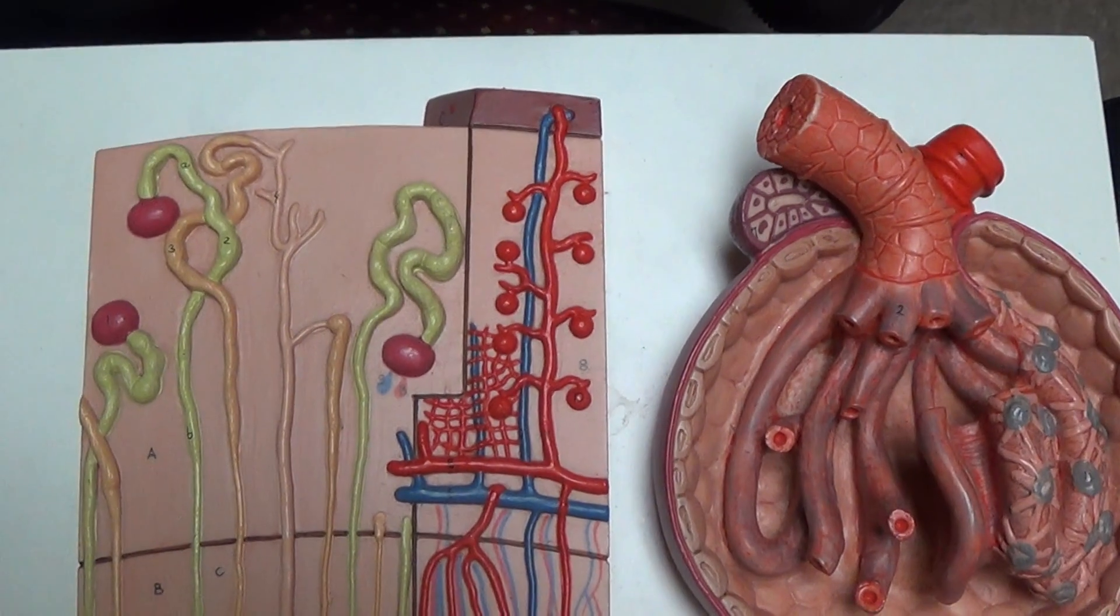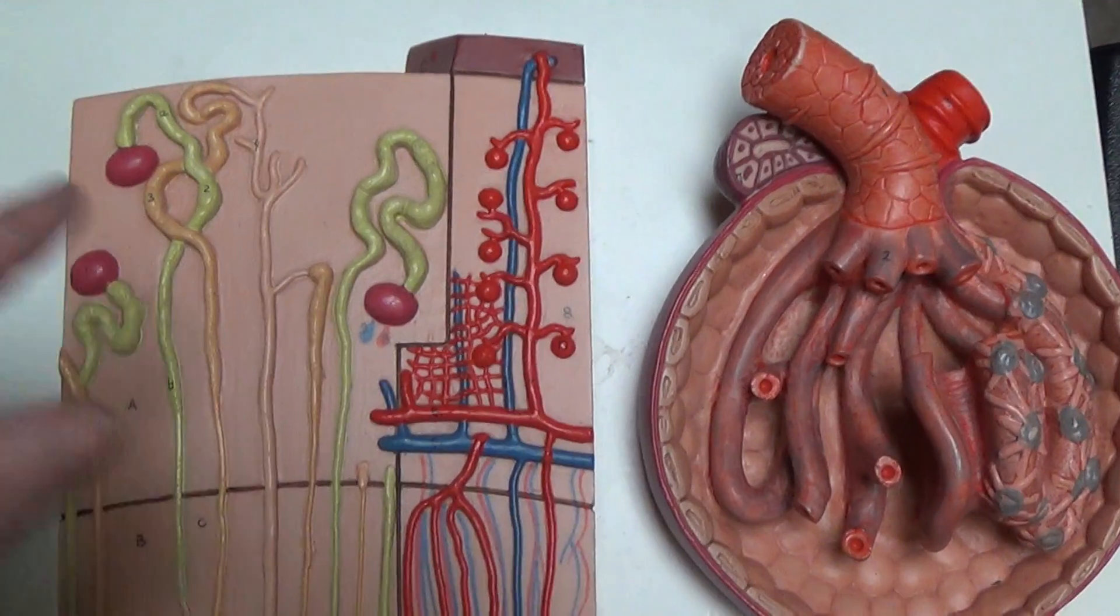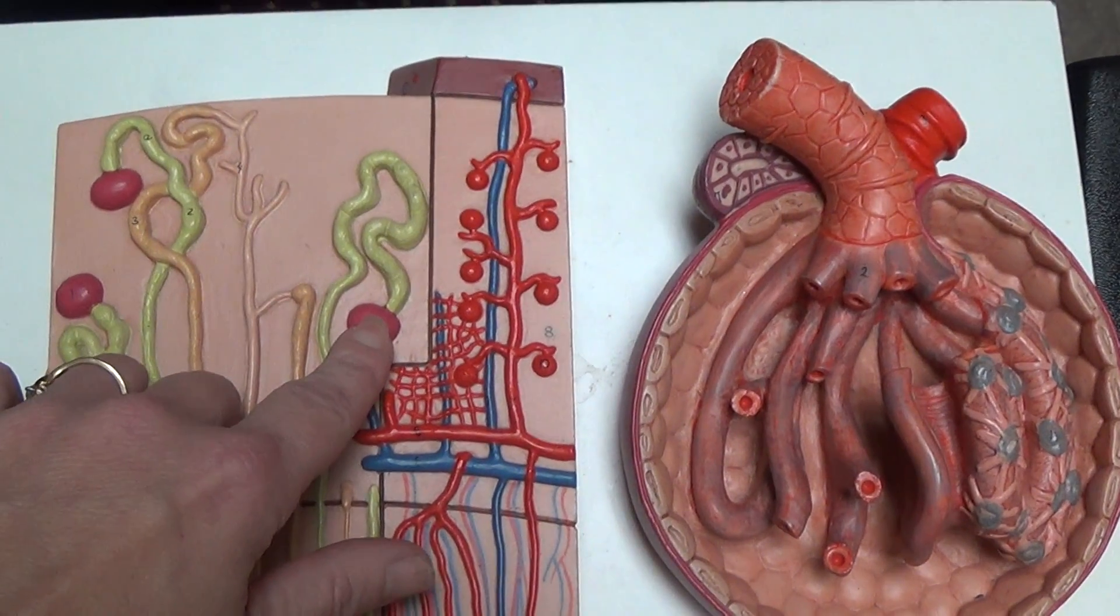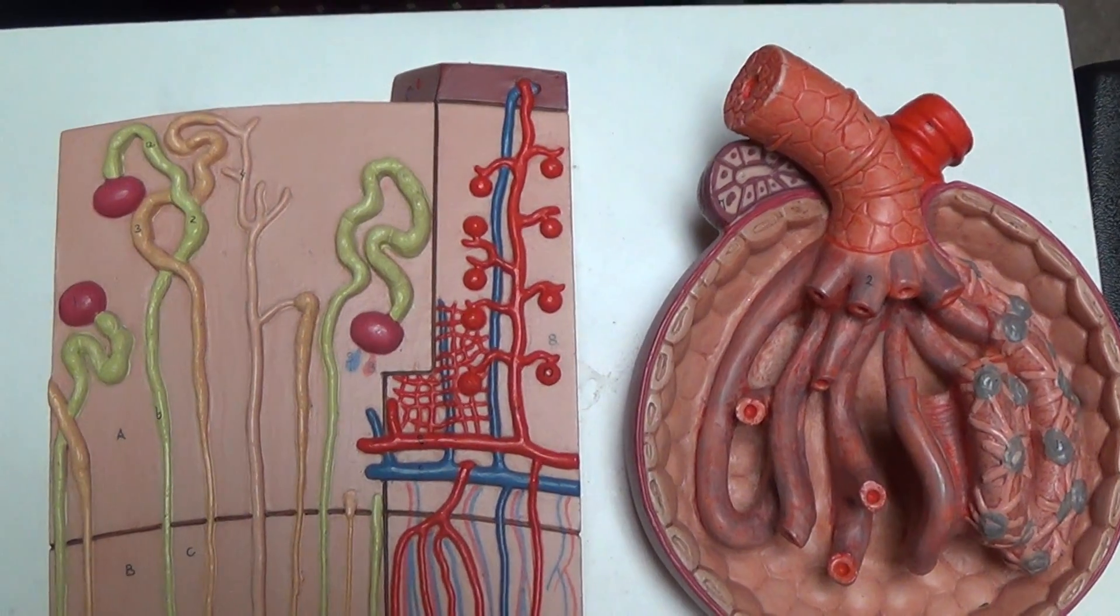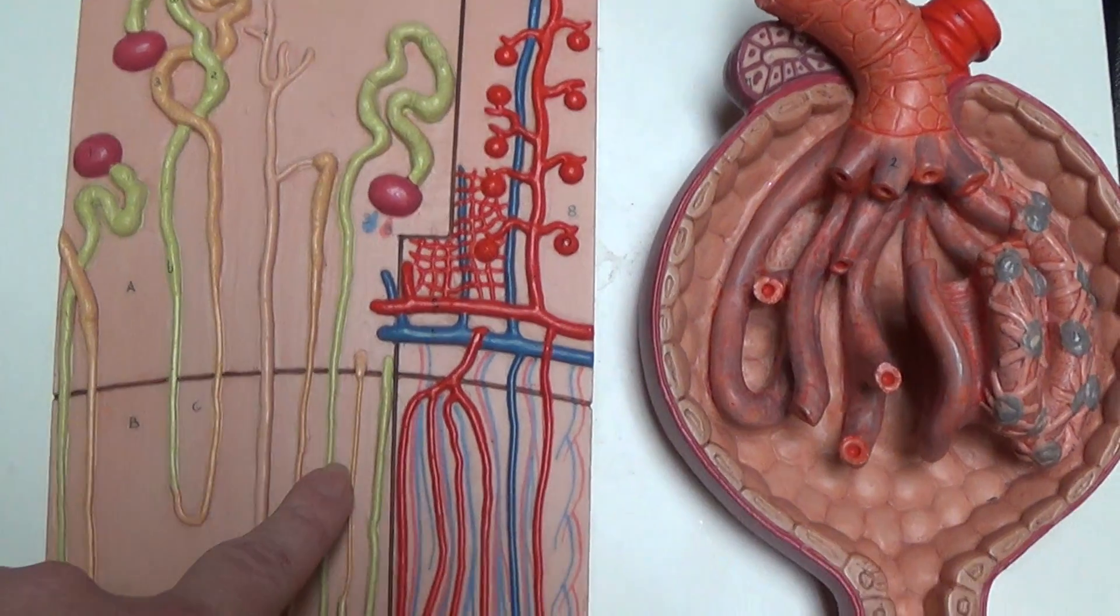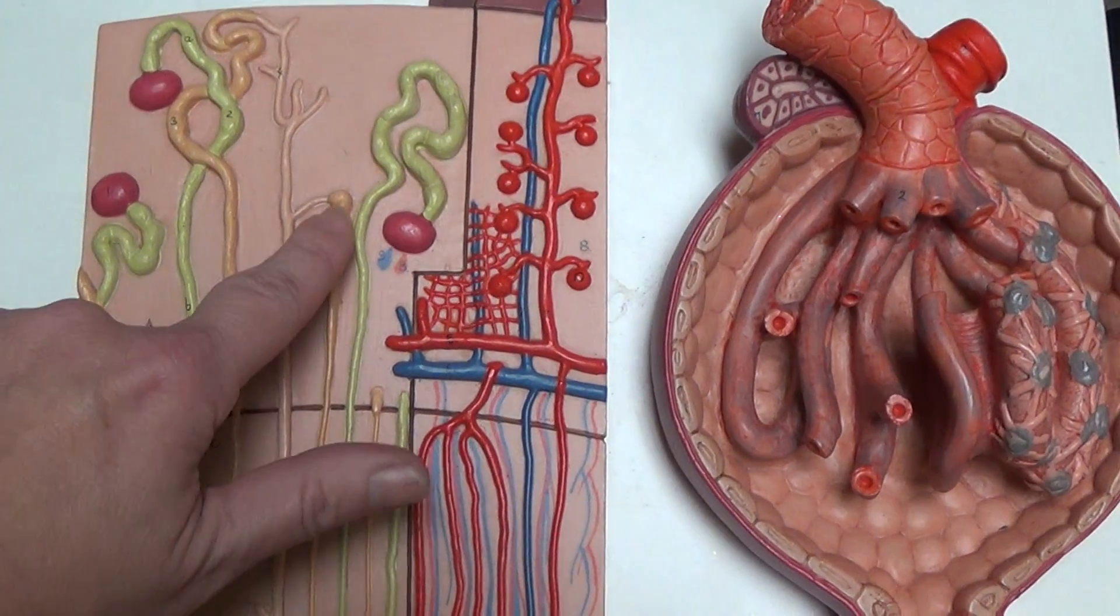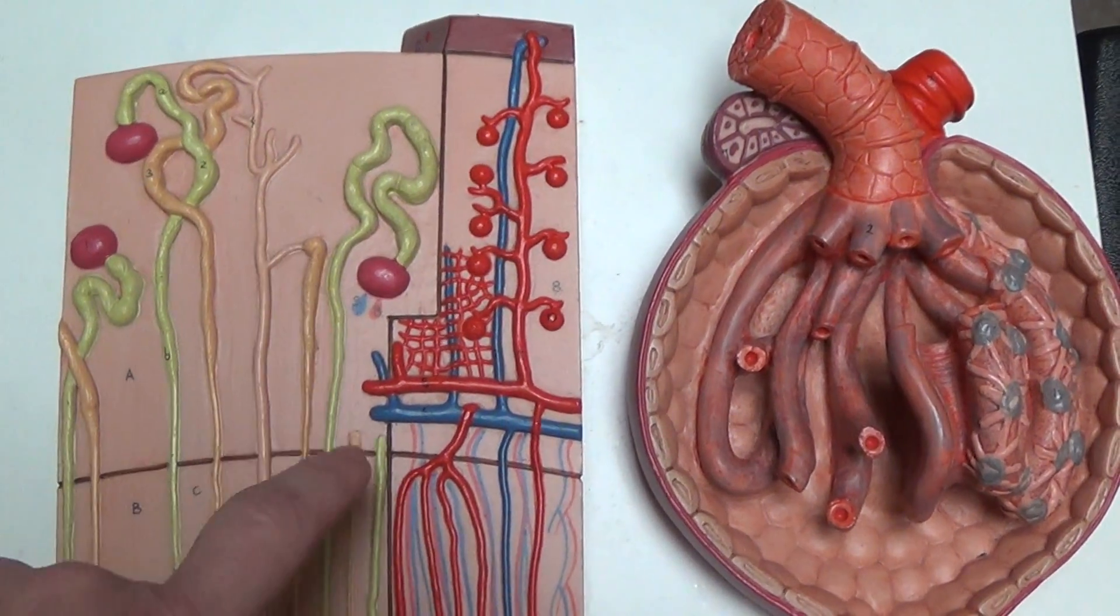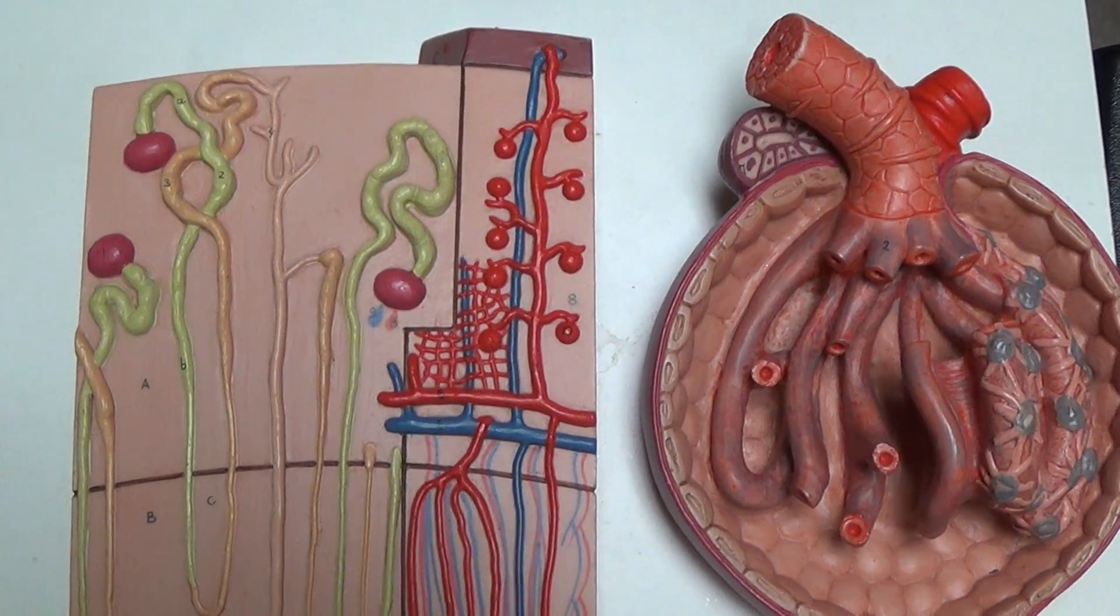So the glomerulus will filter blood and create what is called filtrate. And that filtrate is going to enter a tube. This is the long tube that it enters. It keeps going and going over to here. And it will be highly modified in that tube.